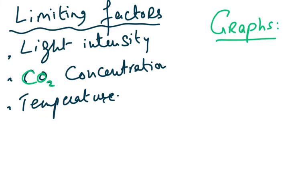Limiting factors means that factor which, among a number of other factors, will restrict the rate of photosynthesis. For example, if you are making rotis and you don't have enough flour, you can't make them. Similarly, if you have flour but no stove or heater to cook on, you still can't make them. Basically, limiting factors in photosynthesis are light intensity, carbon dioxide concentration, and temperature.